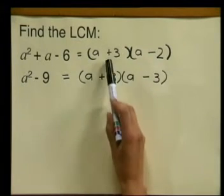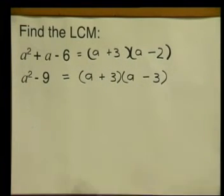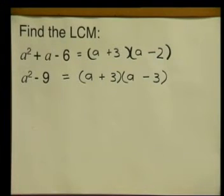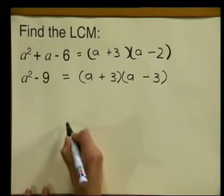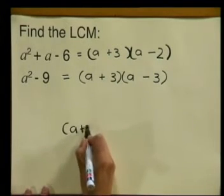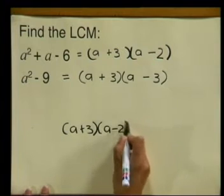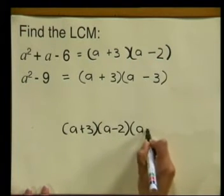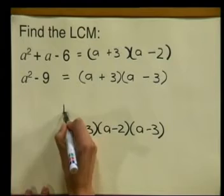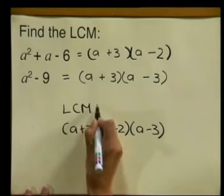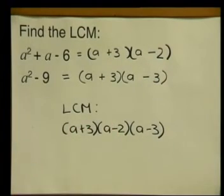Do you see that there are three different factors? And remember, to find the lowest common multiple, we must choose the highest power of each different factor. So we choose a plus 3 multiplied by a minus 2 multiplied by a minus 3. And this is our lowest common multiple. It is the smallest expression into which both expressions can divide.